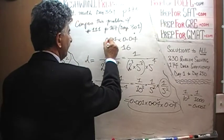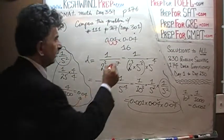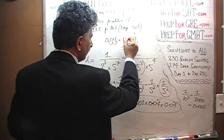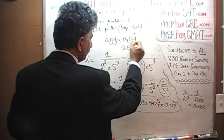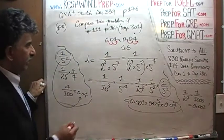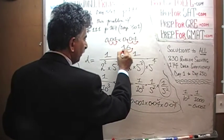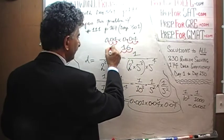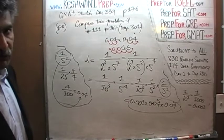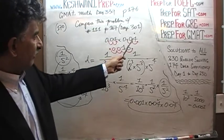So 0.04 times 0.04 is 0.0016. We still have to take care of the 0.001 part. We then have 0.001 times 0.0016. One times 16 is just 16, and now we count all the decimal places: 0.0016 has four decimal places, and 0.001 has three. That gives us seven decimal places total.